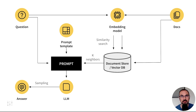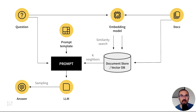We feed all documents into a document store and then use an embedding model to find relevant documents for user questions. The embedding model converts documents into numeric representations and stores them in a vector database. We also pass user questions to the embedding model to find similar documents through similarity search.